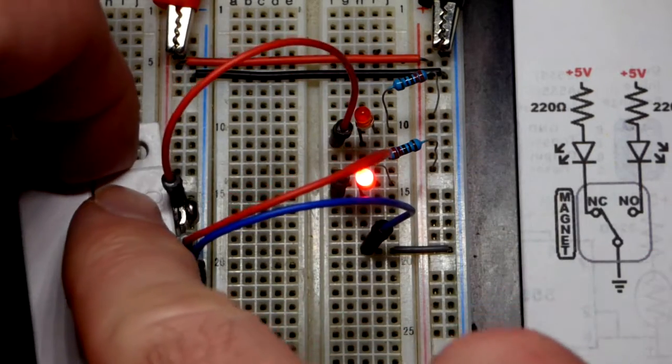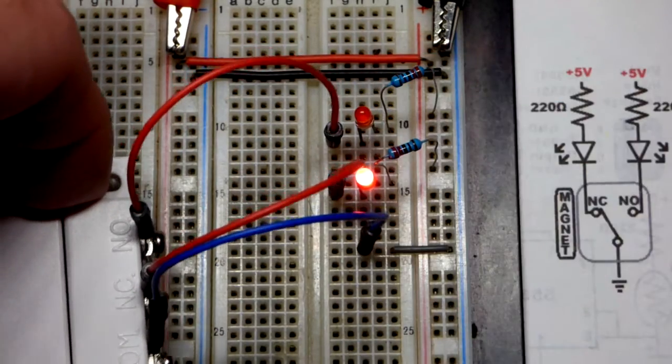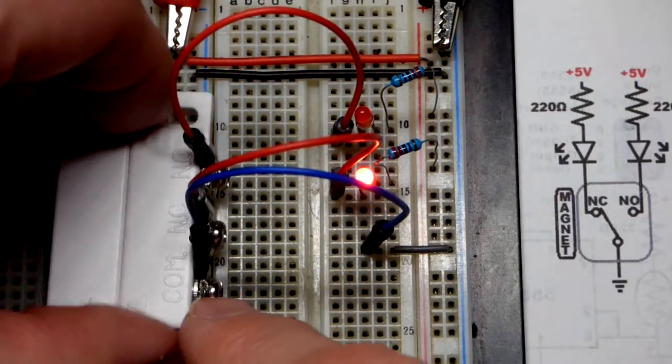The LED is lit. That's the normally open. So again, magnet's next to it. That's normal. It's open. There's no conductive path. That LED is off.